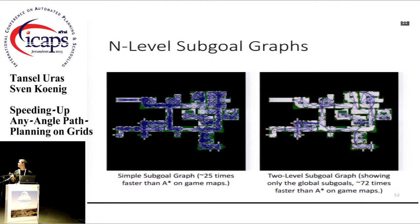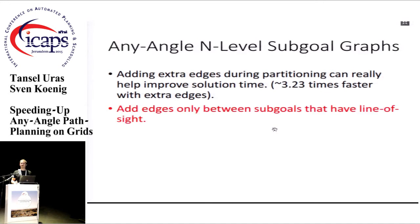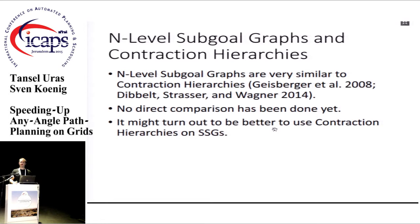This is much faster — almost two times faster in this case. During construction, extra edges can be added to make the online search around three times faster on game maps in our experiments. The only modification needed for the any-angle version is to add edges between vertices that are visible, along with the changes made to simple sub-goal graphs. The hierarchy used is very similar to contraction hierarchies, and a comparison with contraction hierarchies on simple sub-goal graphs is planned for future work.